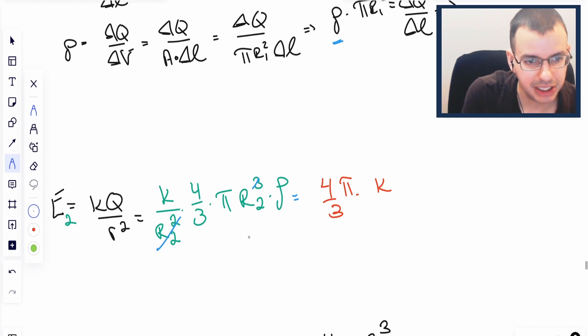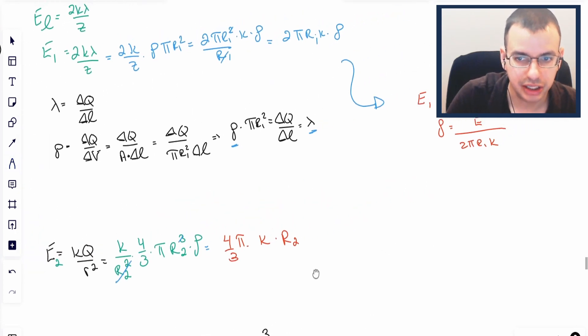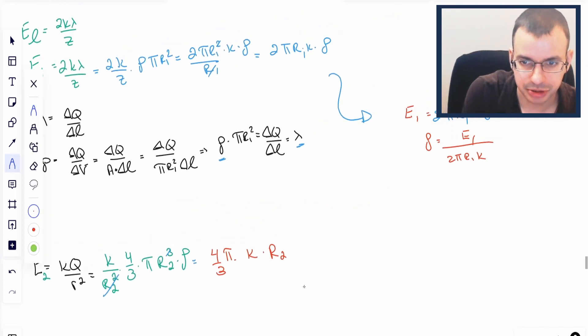So we have 4 thirds pi times K times R2 times rho, which we know is E1 over 2 pi R1 K.